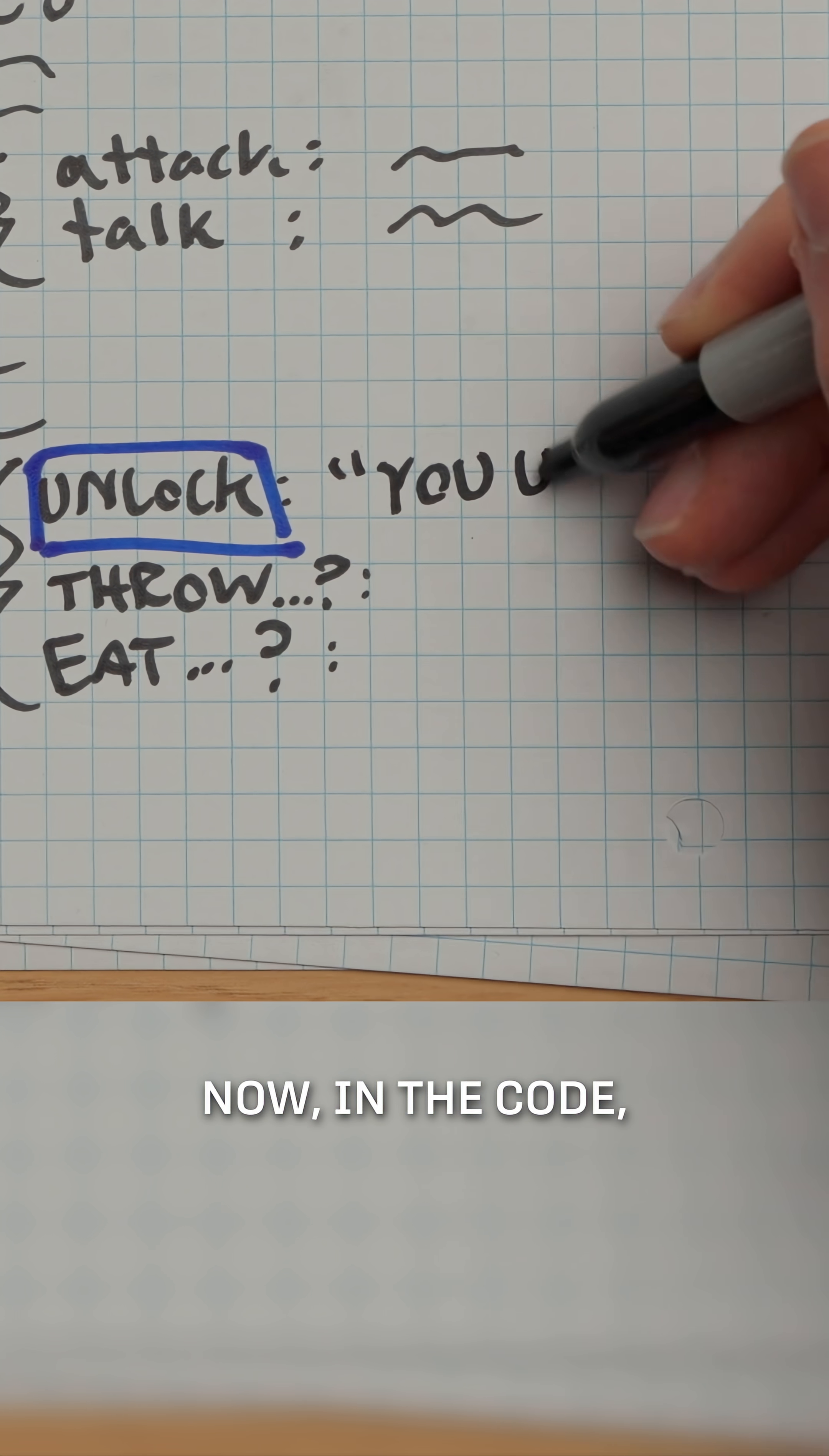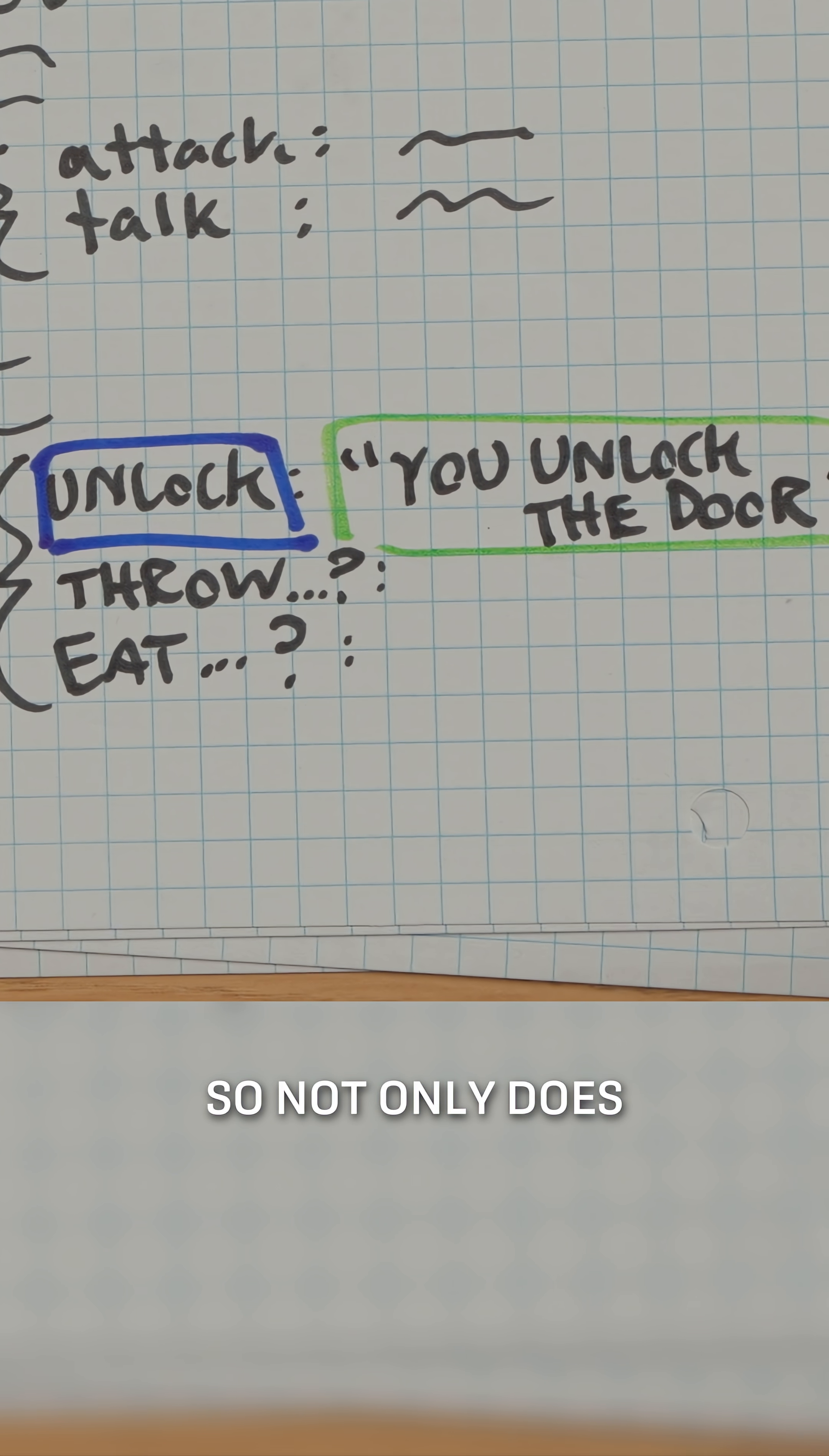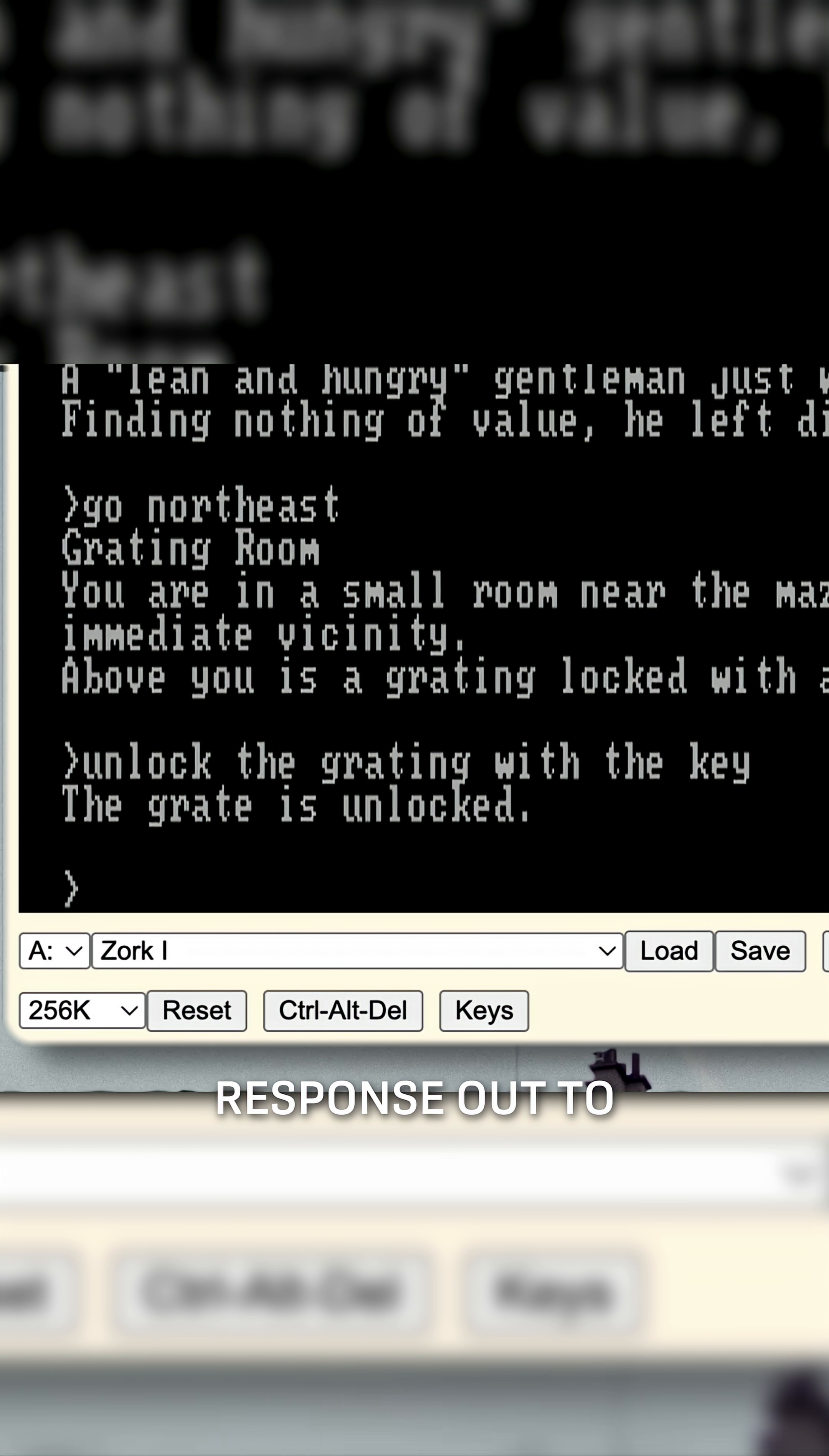Now, in the code, every single action-object combo results in a pre-written response. So not only does Zork change the internal game state to reflect what just happened, it also prints this stored response out to the console.